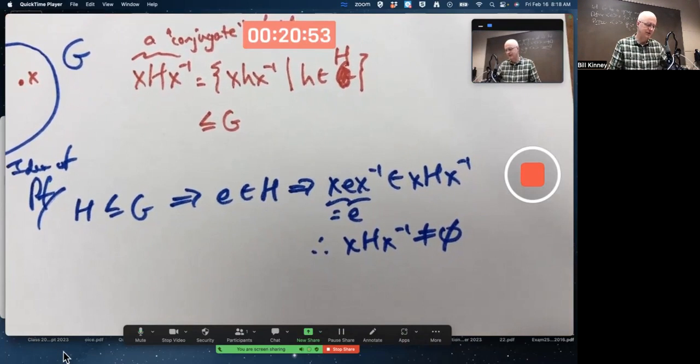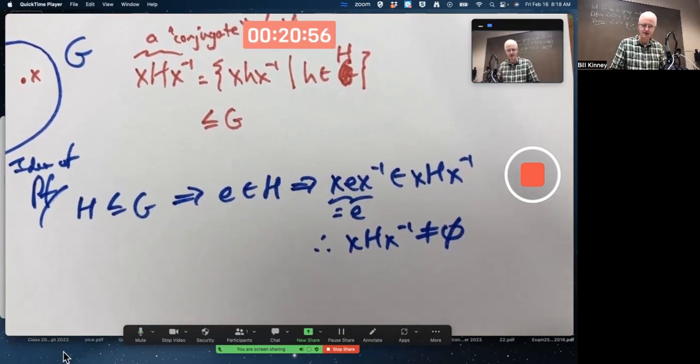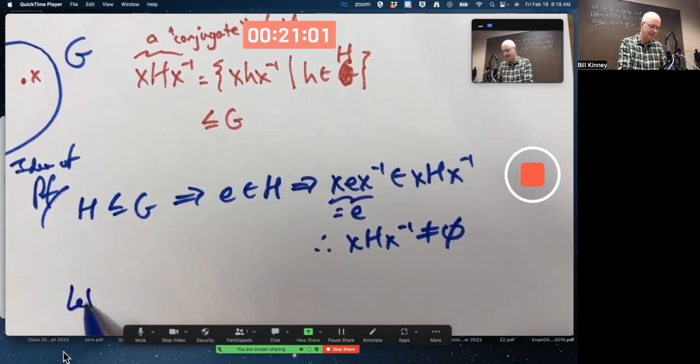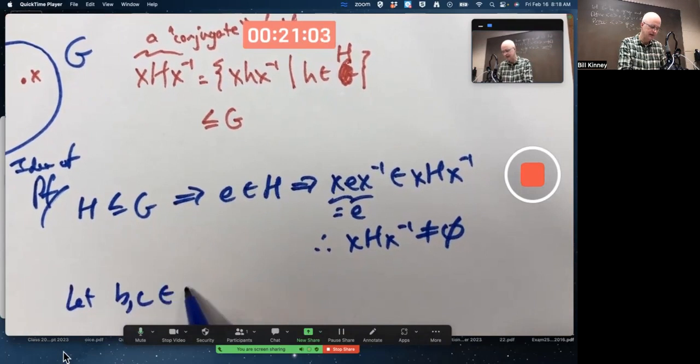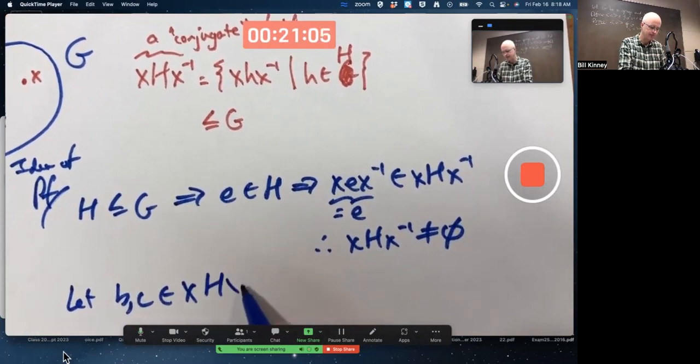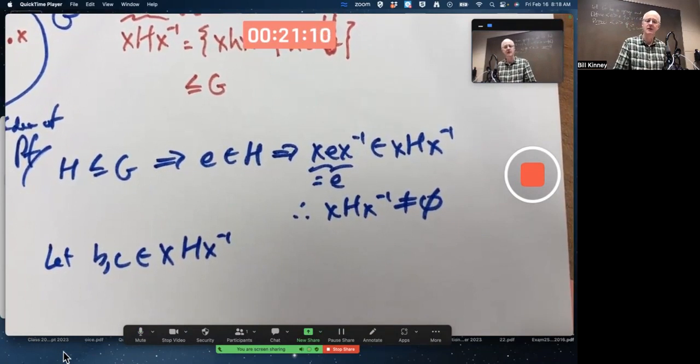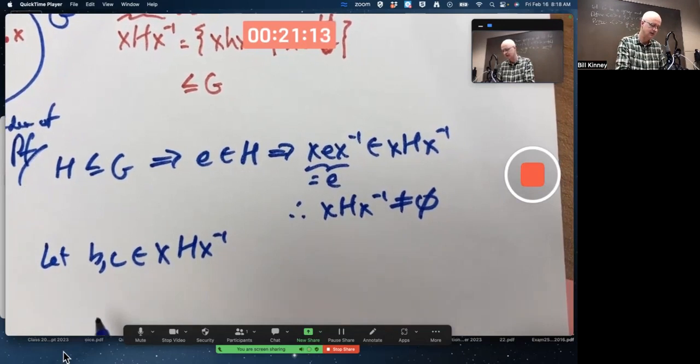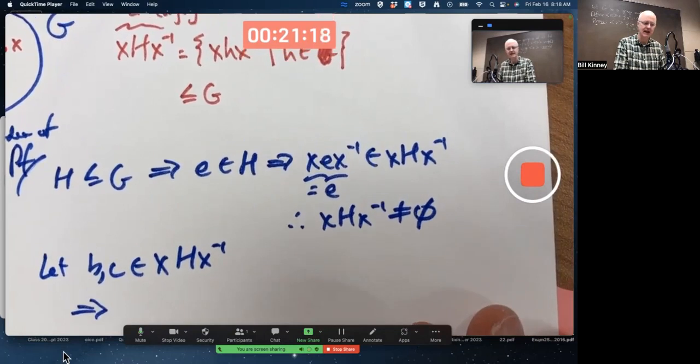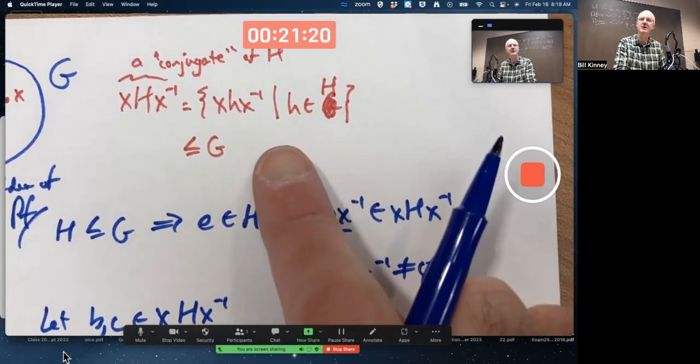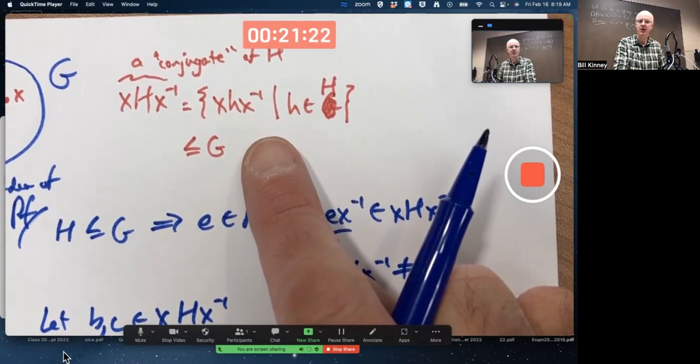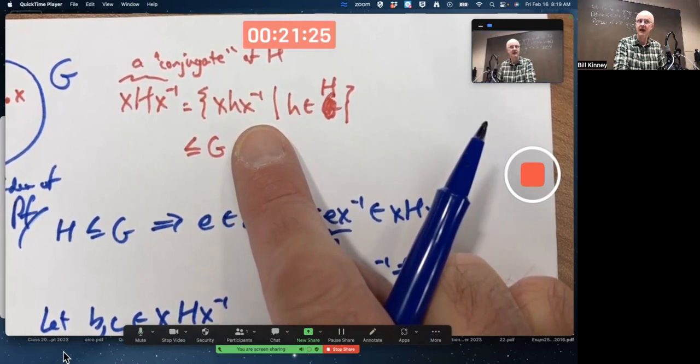Should we try the one-step or two-step subgroup test? I think I'm going to do the two-step subgroup test. Once again, I could say let b and c be in here. I'm going to show it's closed under multiplication. What does it mean to be in there? You always have to go back to what it means to be in the set. What is the definition of the set? It's all products of this form. Again, x is fixed, h is varying over capital H.